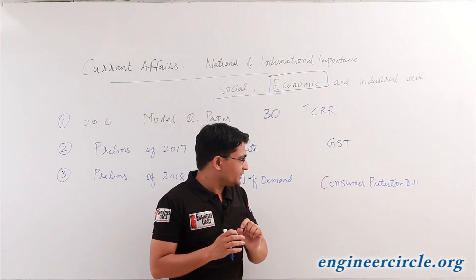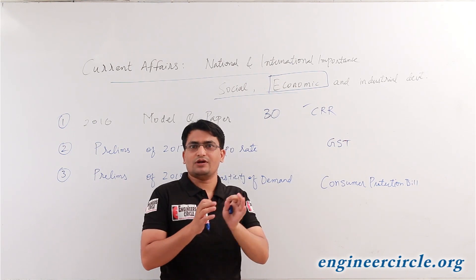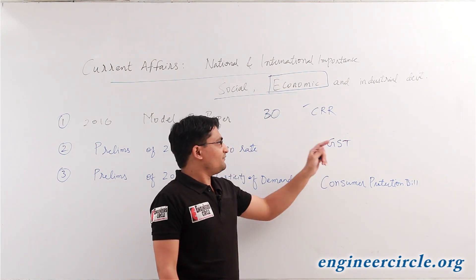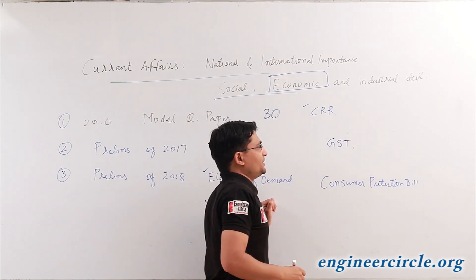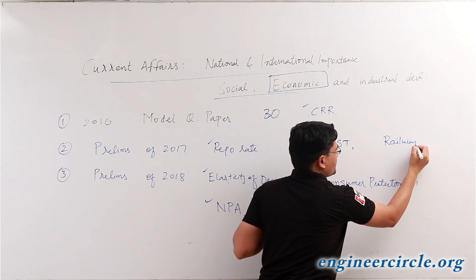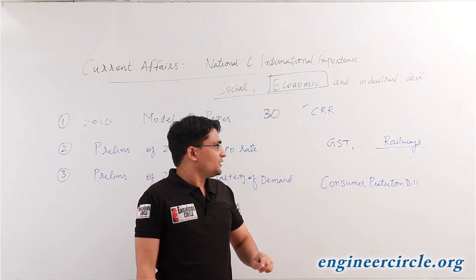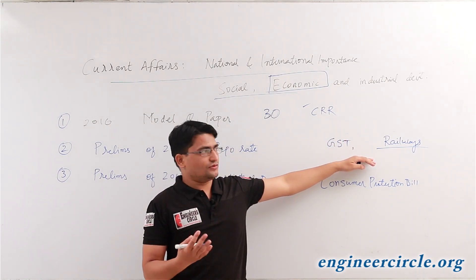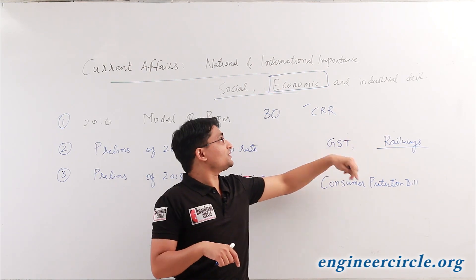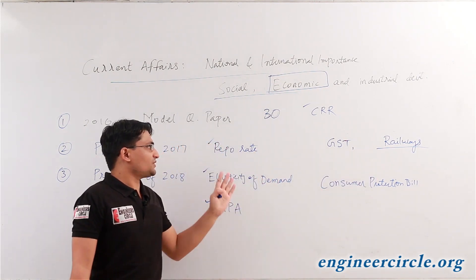So what we can conclude is that we also need to cover different types of bills that are in the Lok Sabha or Rajya Sabha or passed by the cabinet to be introduced in Parliament. Similarly, one question was asked relating to a committee — specifically, which committee was formed relating to railways, and the correct answer was the Bibek Debray Committee. So questions can be asked about committees also. Railways is a part of infrastructure, and infrastructure comes under economic and industrial development.